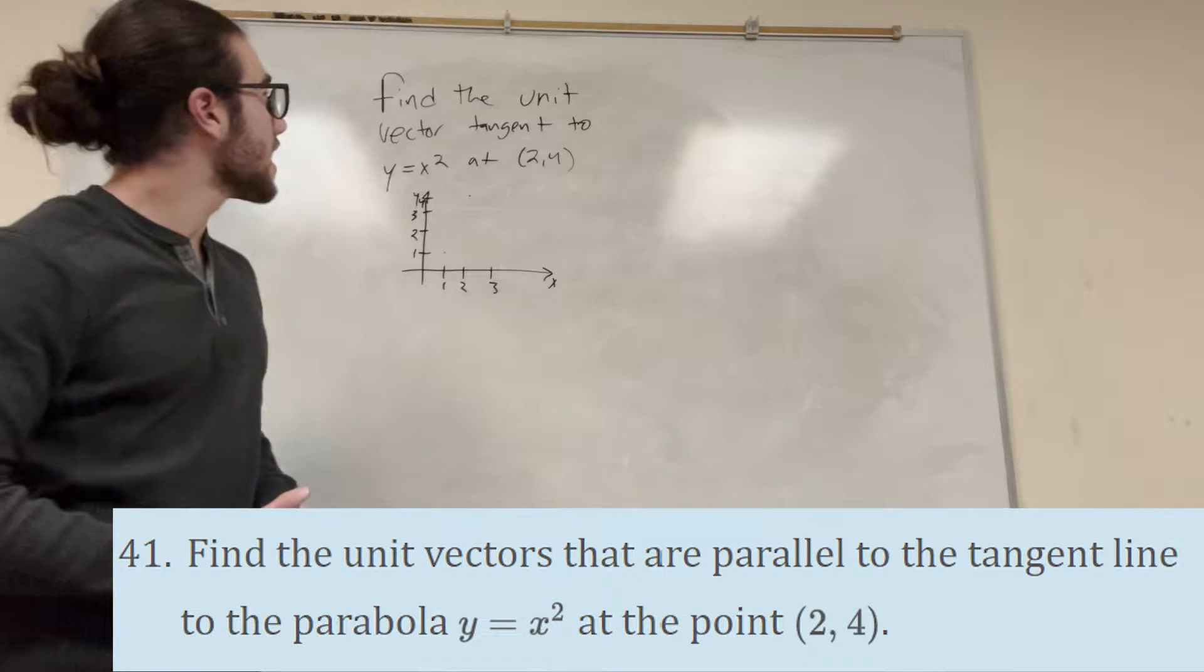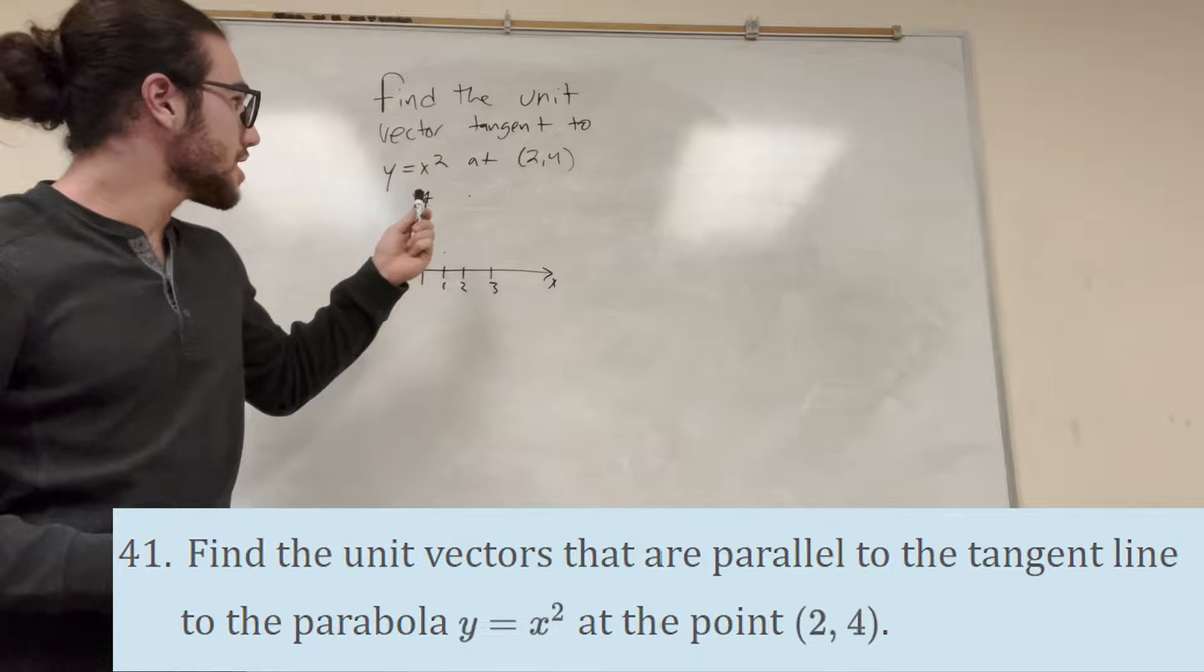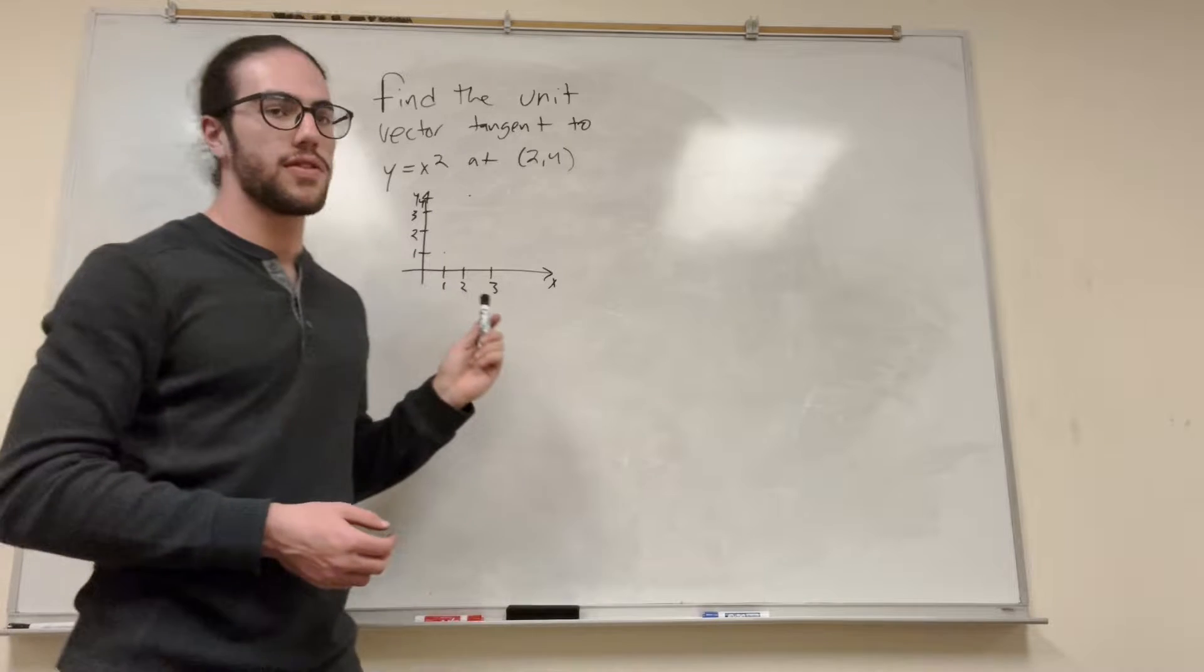What's up, Cal gang? Today we're going to be finding the unit vector tangent to y is equal to x squared at the point 2, 4.